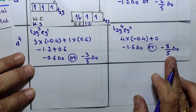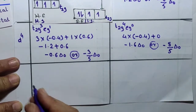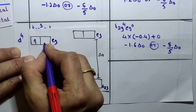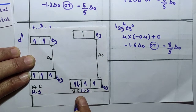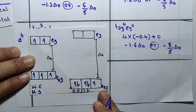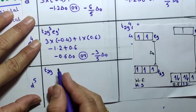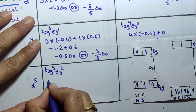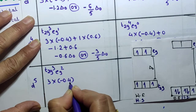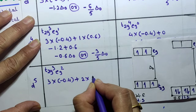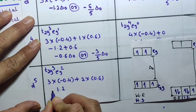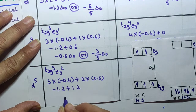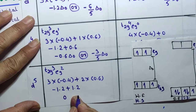For the d5 configuration, in weak field (high spin) ligands the configuration is t2g = 3, eg = 2. CFSE = 3 × (−0.4) + 2 × (0.6) = −1.2 + 1.2 = 0. The crystal field stabilization energy for the d5 high spin configuration is zero.